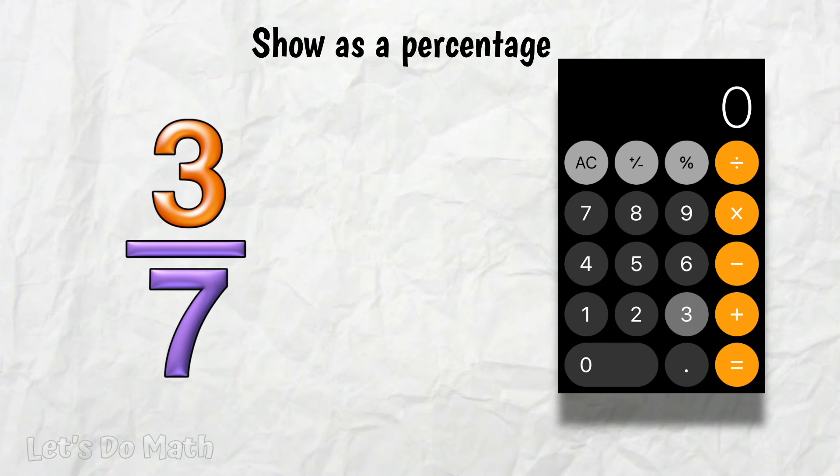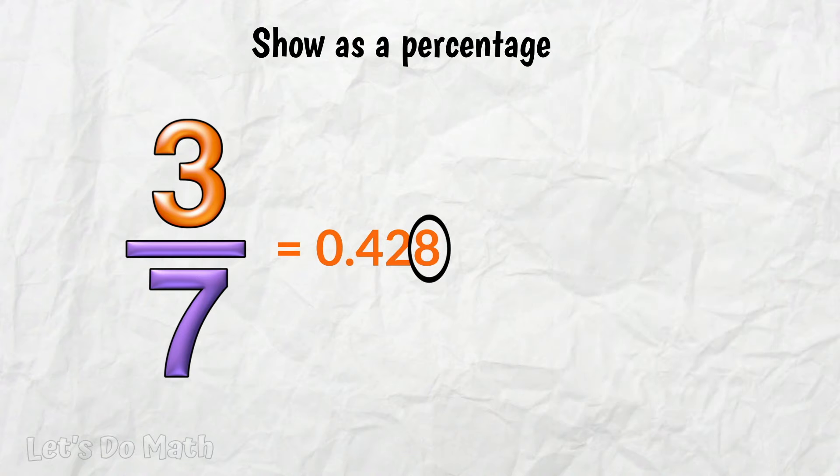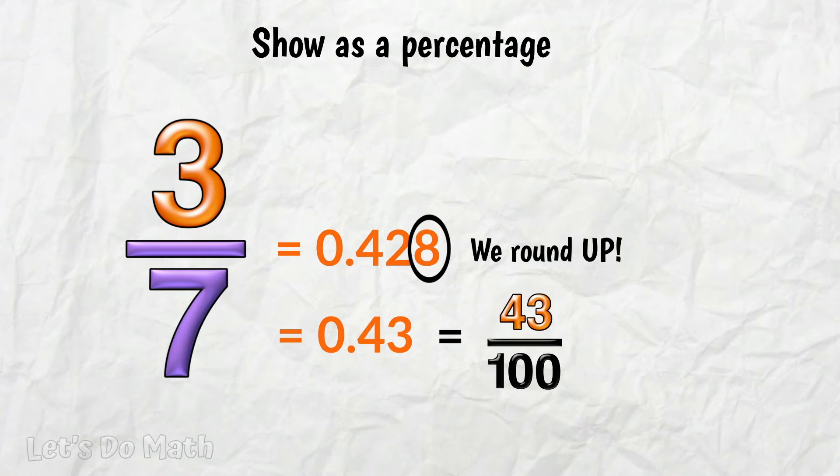3 sevenths. 3 divided by 7. 0.428 is the part we're interested in. The 8 tells us we round up to 0.43, and that is, of course, 43%.